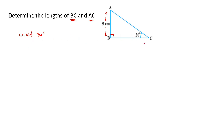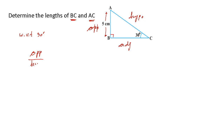Let's define all three sides with respect to the 30 degree angle. With respect to this 30 degree angle, AB will be called the opposite side, BC will be called the adjacent side, and AC will be the hypotenuse since it is opposite to the right angle. In the question, the opposite side is given and we need to find the hypotenuse and adjacent side. We know the ratio: opposite divided by hypotenuse.